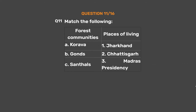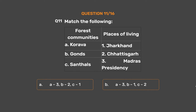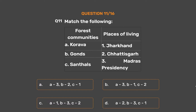Question 11: Match the following forest communities with their places of living. A: Korava — 1: Jharkhand. B: Gonts — 2: Chhattisgarh. C: Santals — 3: Madras Presidency. Option A: A-3, B-2, C-1. Option B: A-3, B-1, C-2. Option C: A-1, B-3, C-2. Option D: A-2, B-3, C-1.